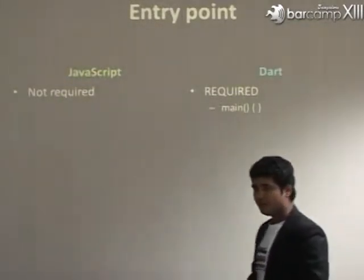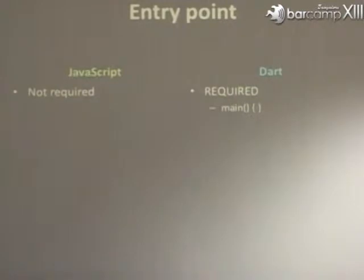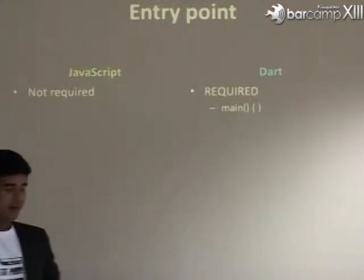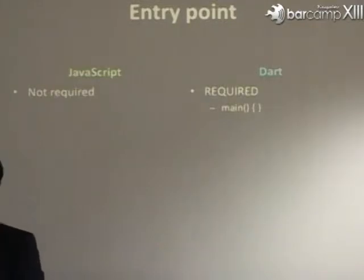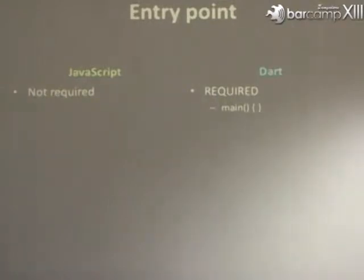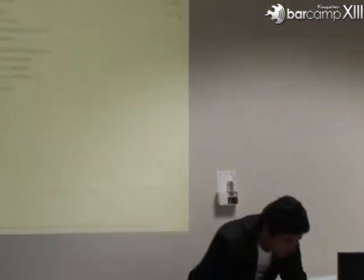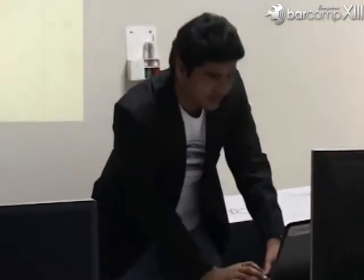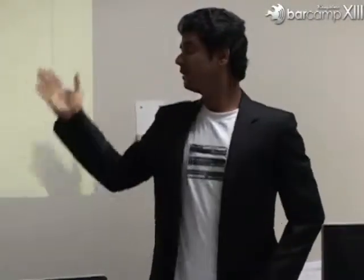I will show how to write a Dart program. They have given a Dart editor, so if you want to use that you can, but there is also a plug-in available for Eclipse. You can install the plug-in in Eclipse and write your code there. Just go to Install New Software, and the URL is given on the Google or Dart site — just take that URL and you can install it easily.